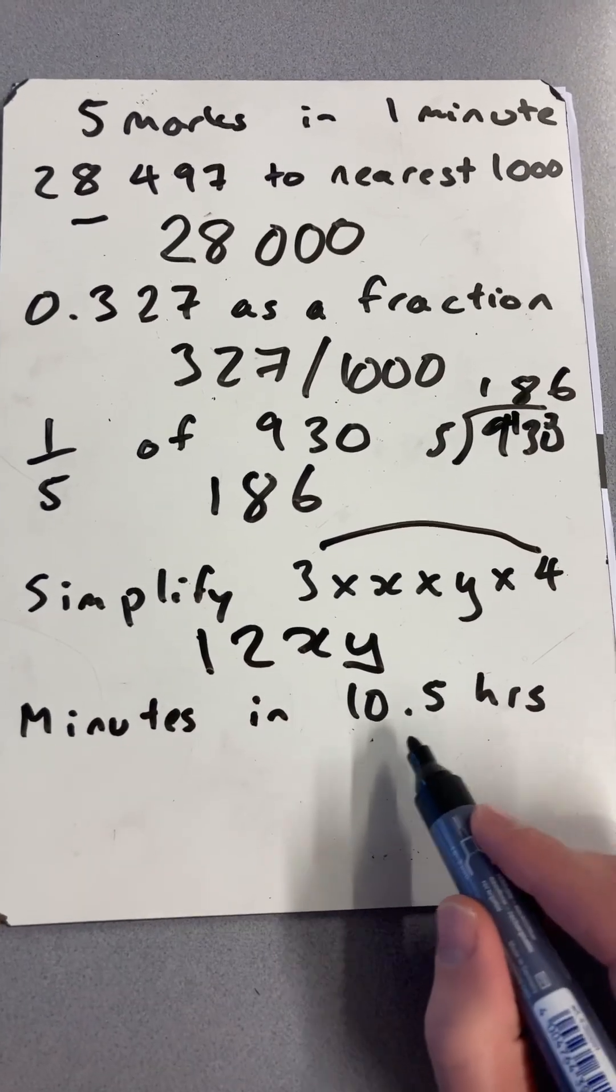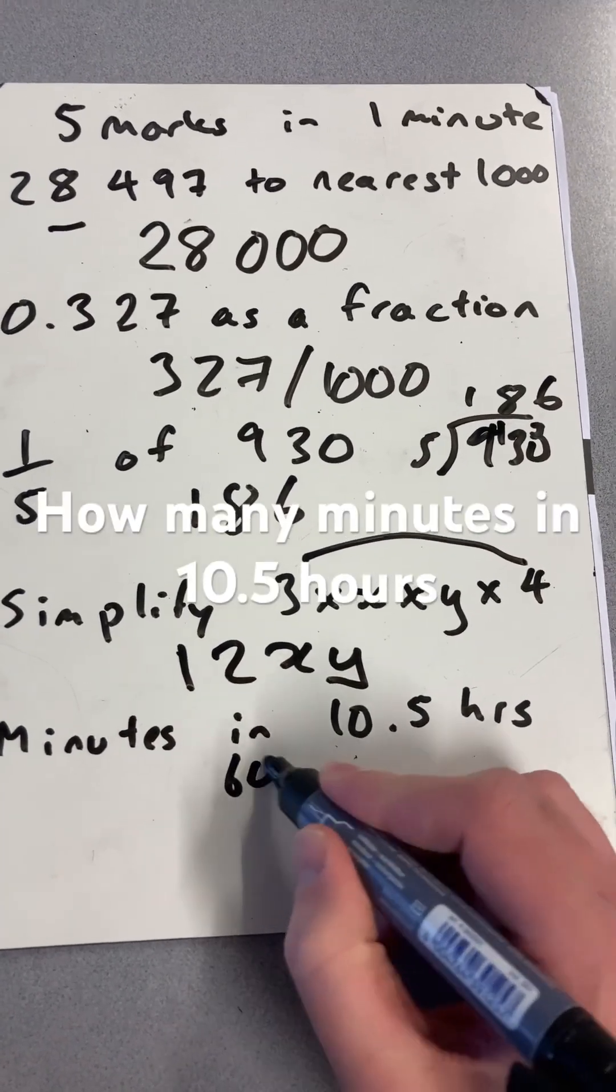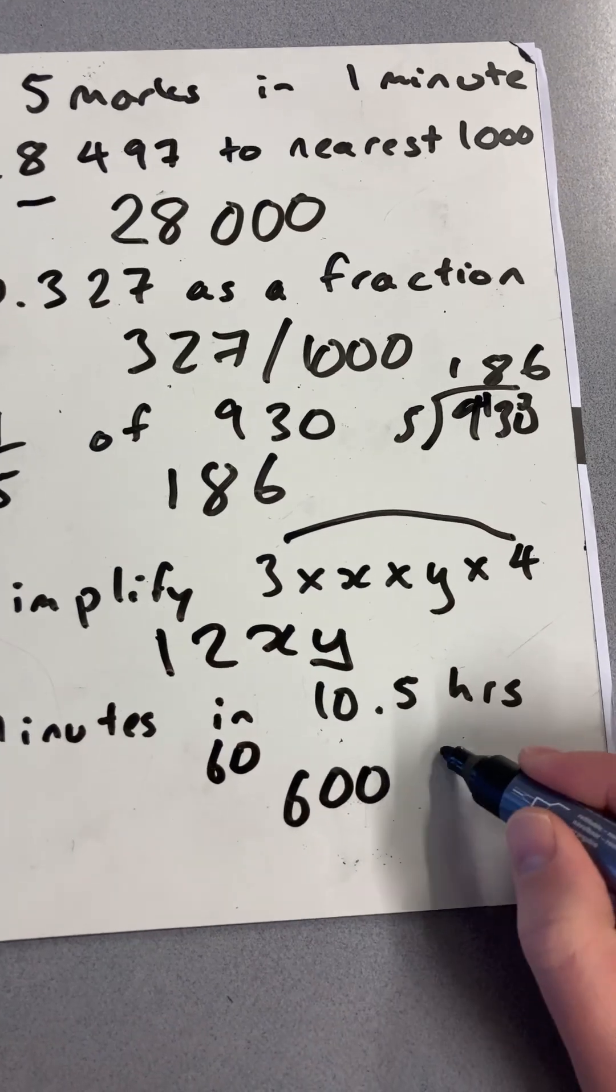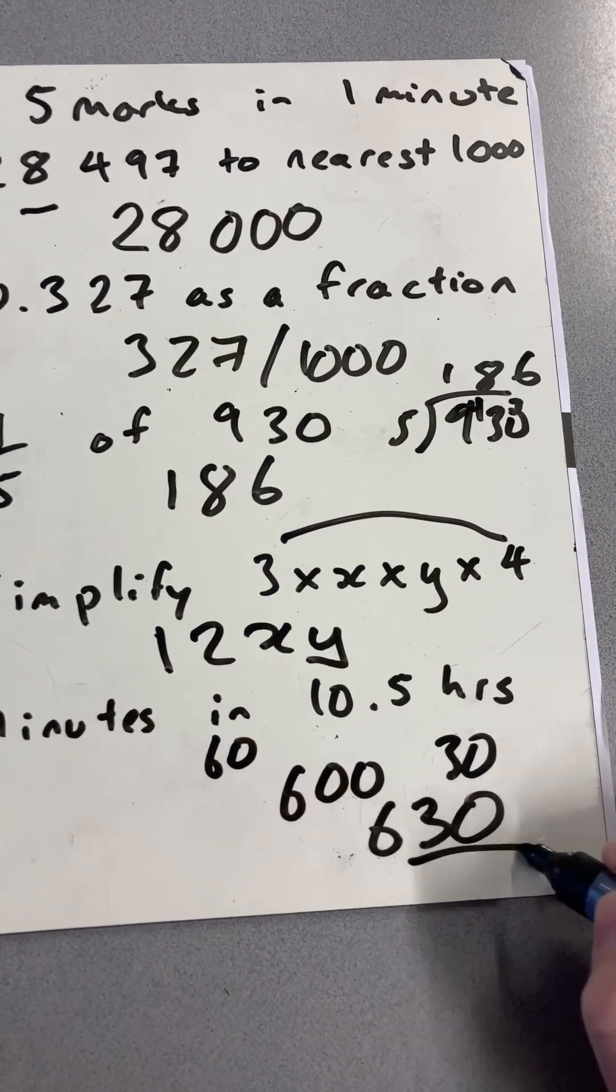How many minutes are there in 10 and a half hours? Well, there are 60 minutes in one hour, so it's 600 plus the 30, which is 630 minutes.